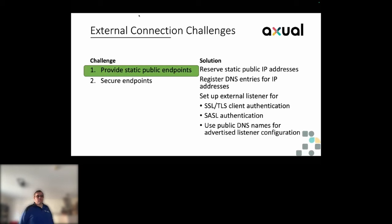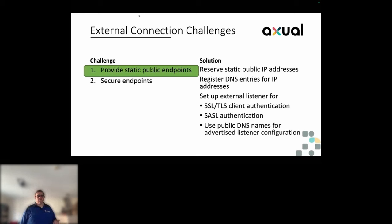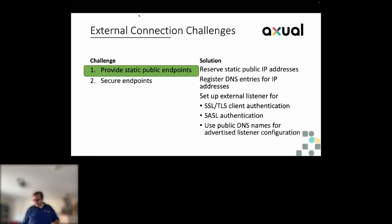The final and biggest challenge is resource usage — getting insight into it and optimizing it. This is where Kubernetes really shines. The challenges are: different node sizes in Kubernetes, pods being scheduled to nodes, and making sure the right nodes are used for Kafka, which needs a lot of CPU and memory, and also making sure other applications are not using those dedicated resources.